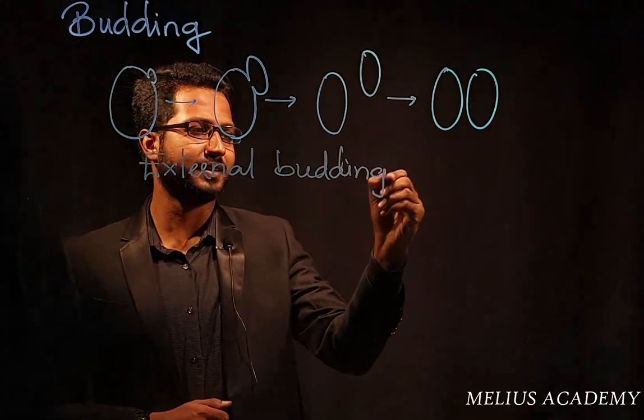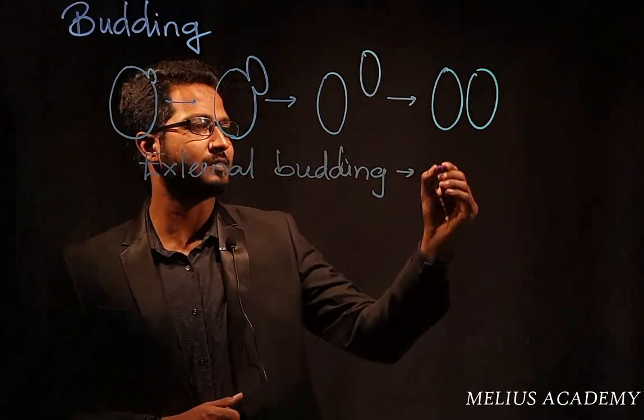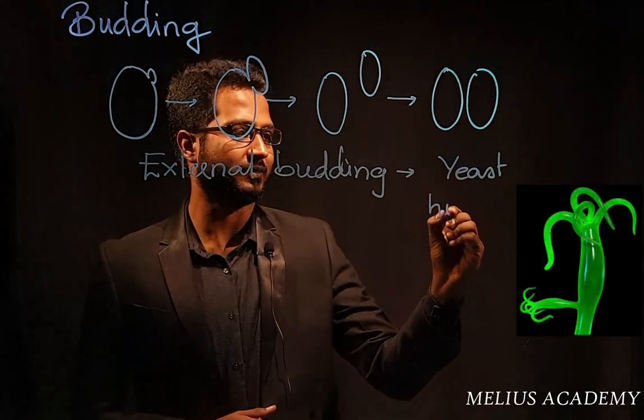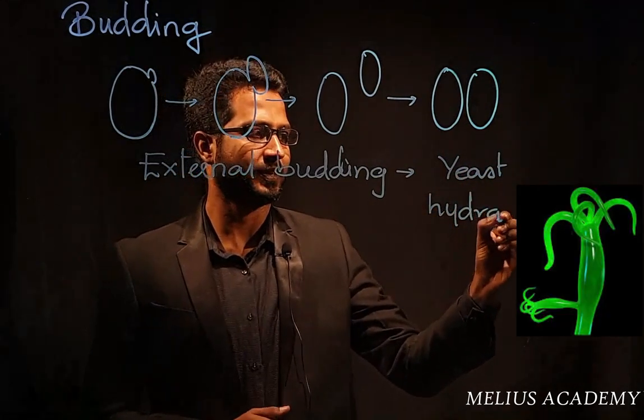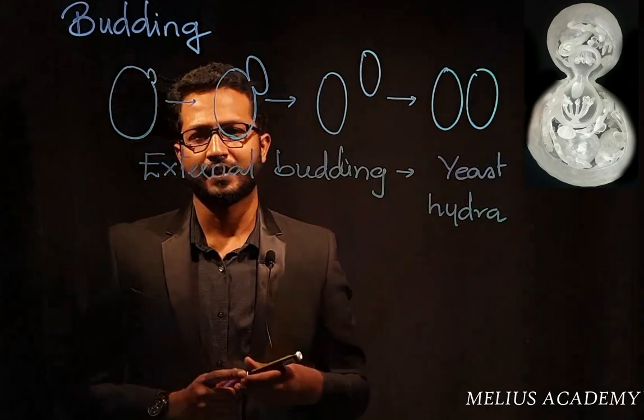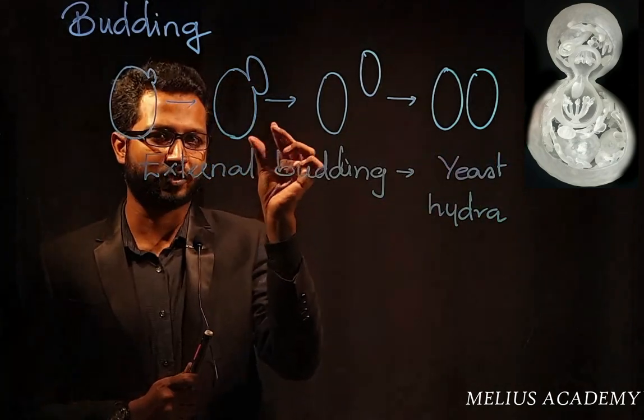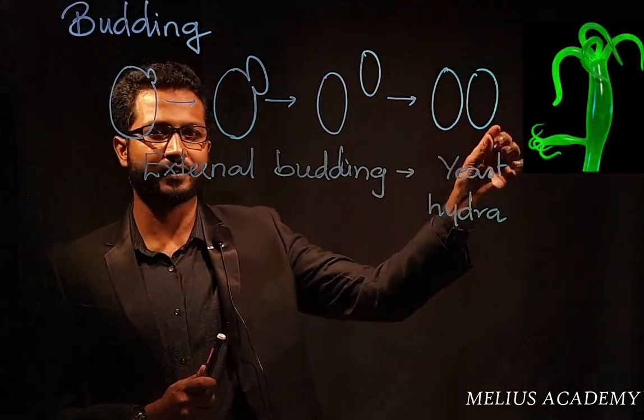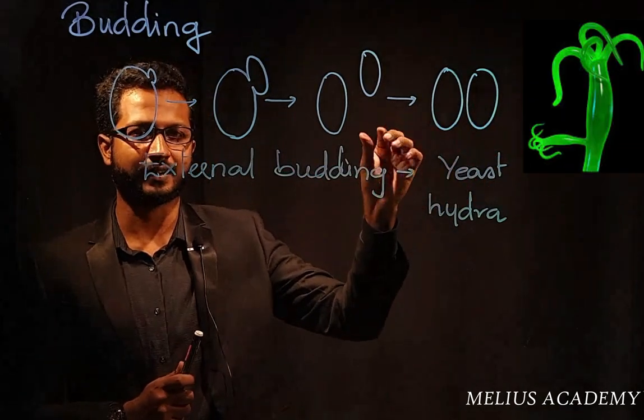External budding is seen in organisms like yeast and hydra. You can see the image over here. The yeast will show small bud-like structures grown on its body, and then followed by that we have hydra wherein we see one small outgrowth.